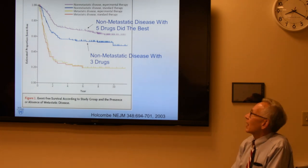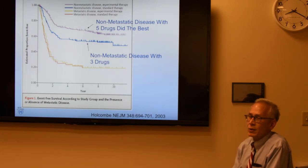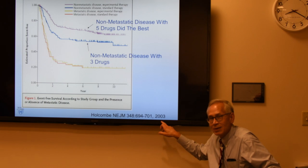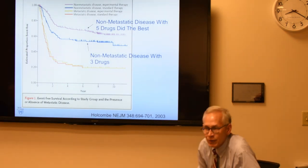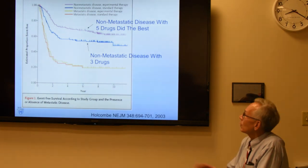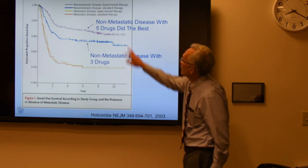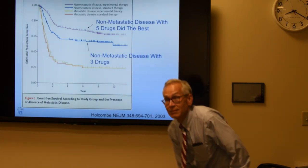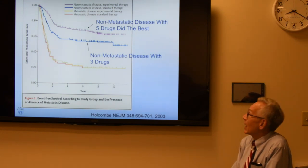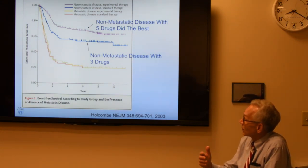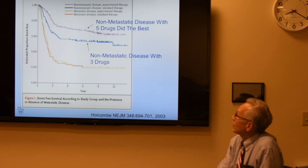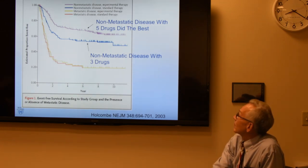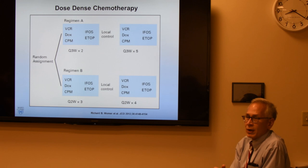We love data in oncology. These are the studies for Ewing sarcoma. In 2003, a study was done comparing three drugs versus five drugs. With non-metastatic disease, five drugs did better than three drugs. The standard treatment became five drugs, and you can see the event-free survival is about 70% with five drugs.